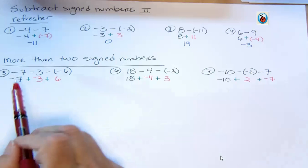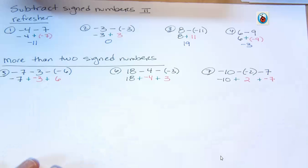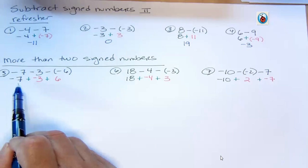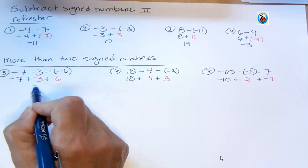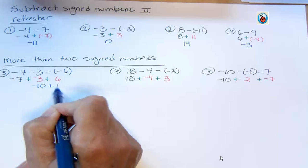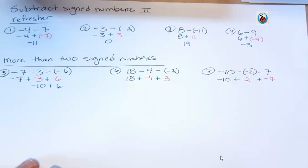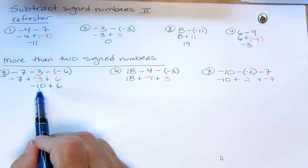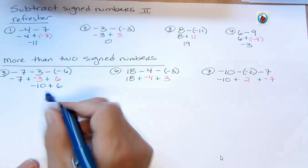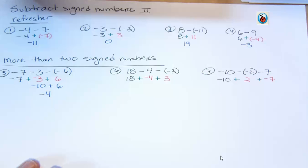So here, going back to what we learned in a previous video, what I do then is I have all addition now, so I add up all my negatives. I have seven and three, which is a total of ten negatives. And I'm adding that to six positives. I have more negatives than positives by four, so my final answer is negative four.